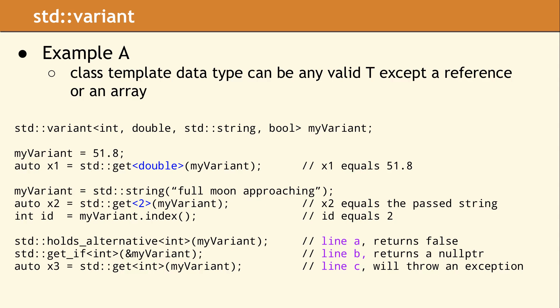We wanted to note that the Boost implementation of the get function does not support access by an index value. Lines A, B, and C show three different ways to query the current alternative of a variant. Line A simply asks the question: does the variant currently hold an int? Since the answer is no, the holds_alternative function returns false. On line B, we call get_if, which returns a pointer to the value if the data type matches, or a null pointer if they do not. Since the types do not match, the return value here will be a null pointer. Line C uses the get function, which will throw an exception, since the requested data type does not match the current alternative.